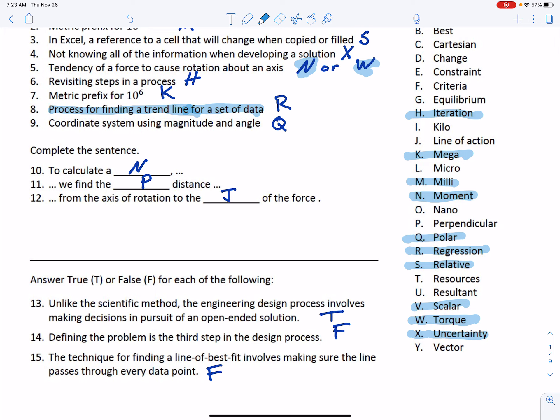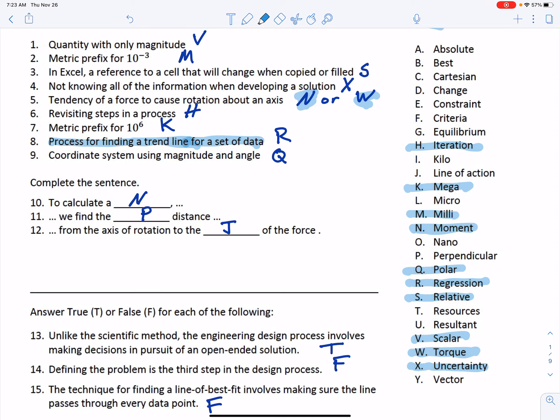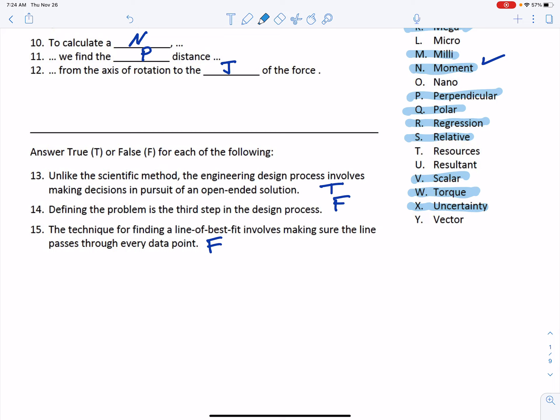Number nine: a coordinate system using magnitude and angle, that's the polar coordinate system. Then we get to this three-part thing that has one sentence. Let me read through that. I think I was pretty lenient on item 10 because it wasn't really clear. So, to calculate a moment, we find the perpendicular distance from the axis of rotation to the line of action. So that's the definition of a moment, and that was the idea on 10 through 11.